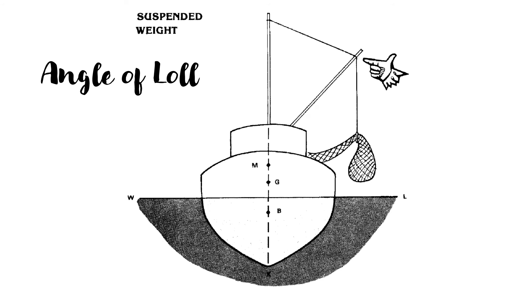We now go on to explain angle of loll. The term loll describes the state of a ship which is unstable when in an upright position and therefore floats at an angle of heel to one side or the other. If disturbed by some external forces such as strong winds or waves, the vessel will lurch to the same angle of loll on the opposite side.